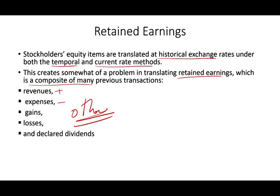Revenues increase retained earnings, expenses reduce it, gains increase it, losses reduce it, dividends reduce it. And those transactions occur over the life of the company — from the day the company was created, retained earnings start at zero, then it accumulates over the years. So that's why there is a complication — because it's a continuous account, you have to know how to translate it.